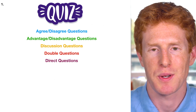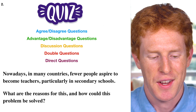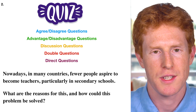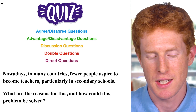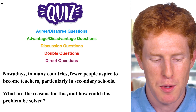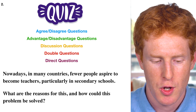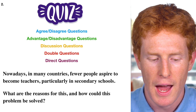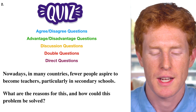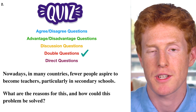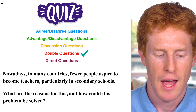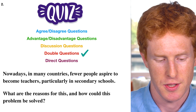Let's look at question two. Look at the bottom part — it says 'what are the reasons for this and how could this problem be solved?' It's a double question. In this case we have to identify reasons and then solutions.